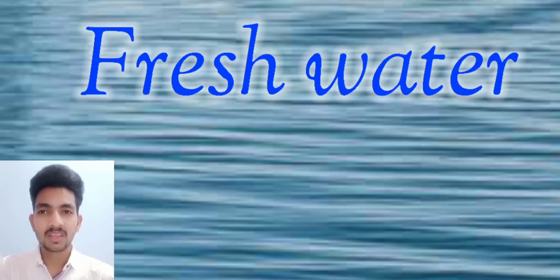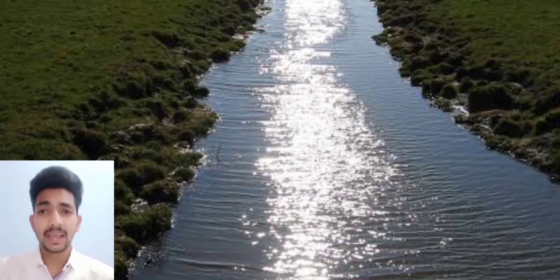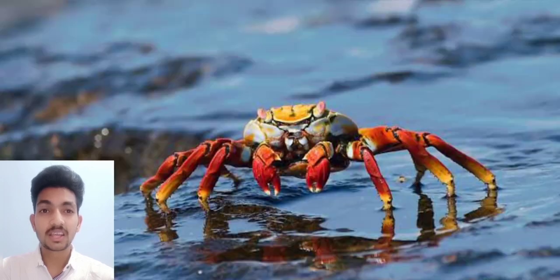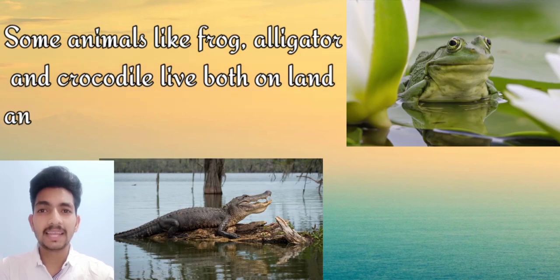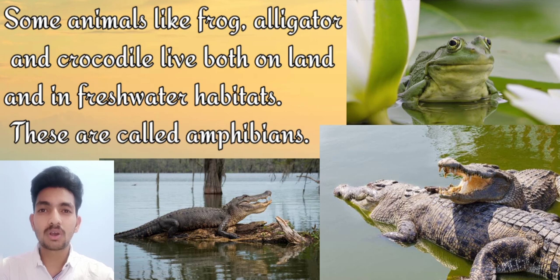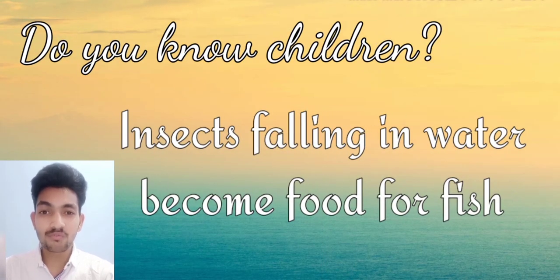Now, fresh water. These habitats have water of rivers, lakes, ponds, and ditches. Animals like duck, goose, fish, crabs, and turtle are found here. Some animals like frog, alligator, and crocodile live both on land and in freshwater habitats. These animals are also called amphibians. And do you know, children? Insects falling in water become food for fish.